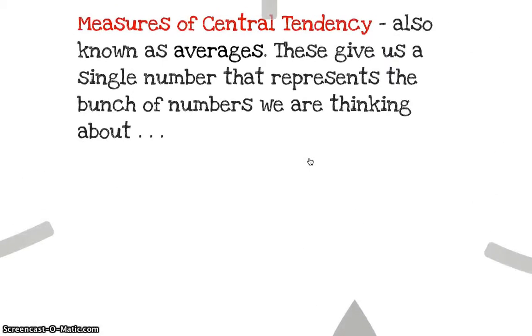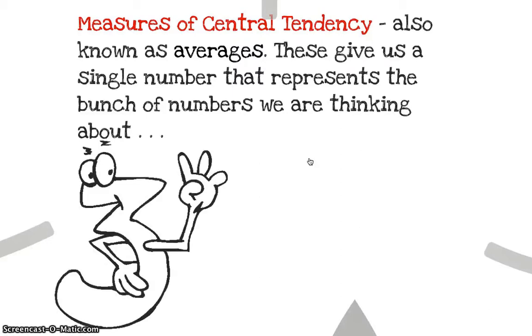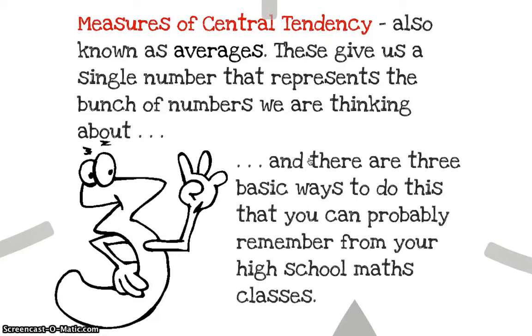So there are two ways you can use statistics to describe a bunch of numbers. First of all, the one you remember from your high school: measures of central tendency. You might not remember calling it that, but we sometimes refer to them as averages as well. And these are supposed to give us a single number to represent the bunch of numbers we're thinking about.